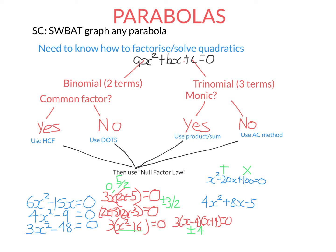We find two numbers that multiply to the constant and add to the middle term. Those two numbers are both negative 10: negative 10 times negative 10 is 100, and negative 10 plus negative 10 is negative 20. So the two numbers that go in the brackets are negative 10 and negative 10. If either bracket equals zero, x is positive 10.